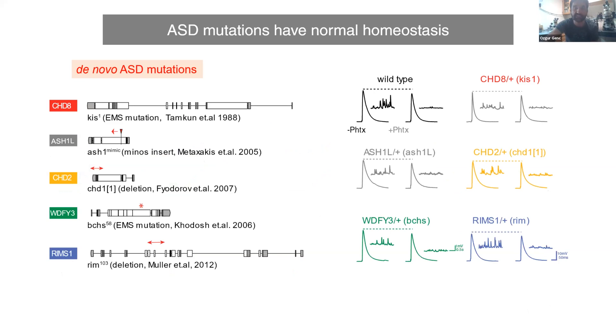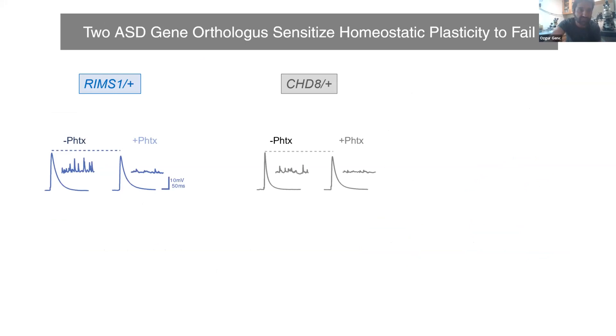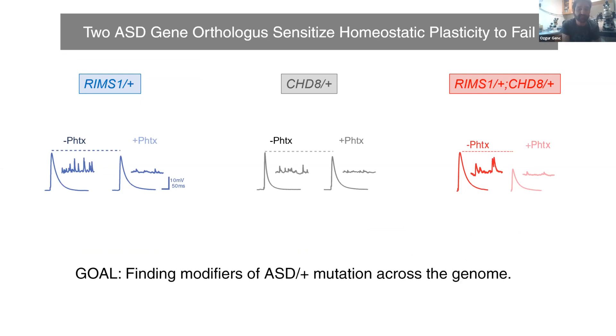We put forward this question: if there is a genomic variation that contributes to the phenotypic severity, what if we put two mutations together as a heterozygous mutation? This is like a simple compound heterozygosity assay in genetics terms. What we found is if we put these two mutations together—they are functionally totally separate mutations, biochemically totally separate genes with no previous biochemical or genetic evidence of their interaction—but when we put them together we see a complete failure in homeostatic plasticity. This basically gave us the idea about finding modifiers of these ASD mutations in the Drosophila genome.